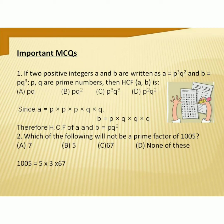Question 2: Which of the following will not be a prime factor of 1005? Find the prime factors of 1005: that is 5 × 3 × 67. Here you can clearly choose the correct option, that is 7. Option A is the correct answer — 7 will not be a prime factor of 1005.